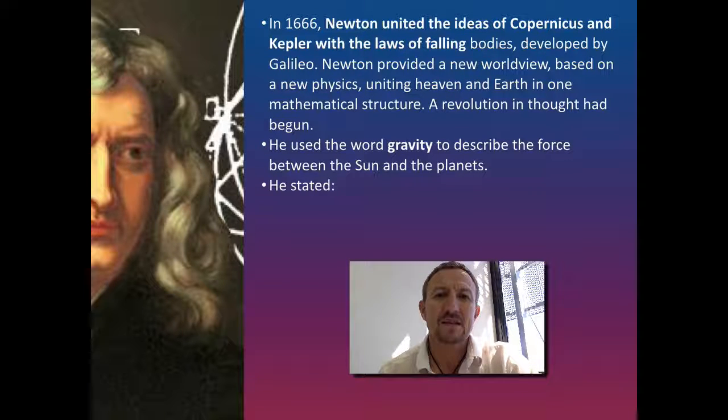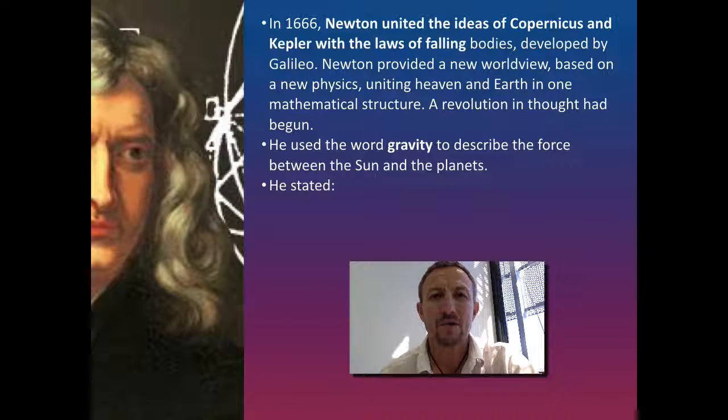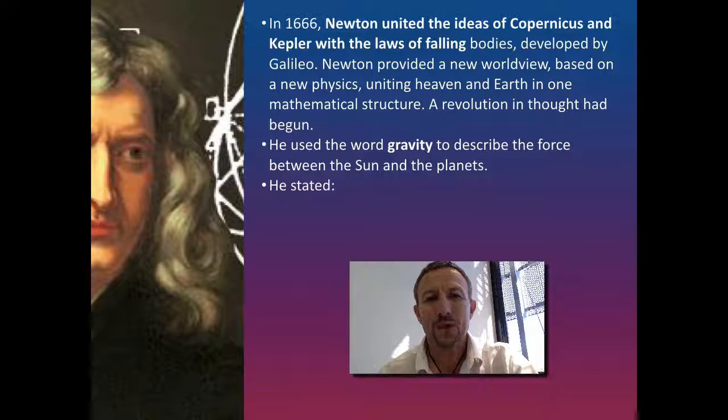But one of the things that had been astounding scientists for many years is although we've got these laws generated by Kepler—his ellipse law, his area law and his period law—and we know that the planets are actually spinning around the sun, what is it that actually holds them in place?